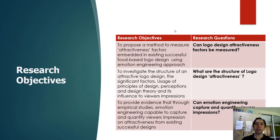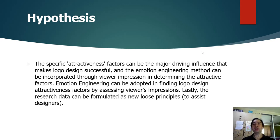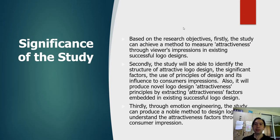The research objective is to propose a method to measure attractiveness factors embedded in existing successful food-based logo design using a UCD approach or Kansei engineering. The hypothesis is that specific attractiveness factors can be the major driving influence that makes logo design successful, and the emotion engineering method can be incorporated through viewer impression in determining the attractive factors. Emotion engineering can be adopted in finding logo design attractive perspectives by assessing viewers' impression. Lastly, the research data can be formulated as new loose principles to assist new designers or student designers. The study can achieve a method to measure attractiveness through viewers' impressions in existing successful logo design.